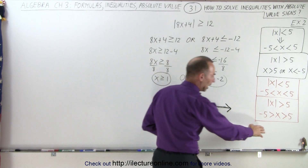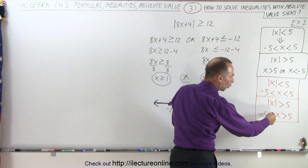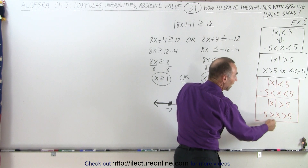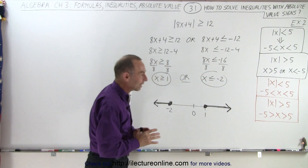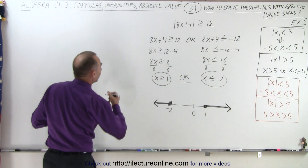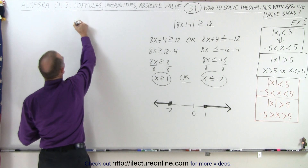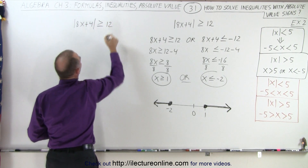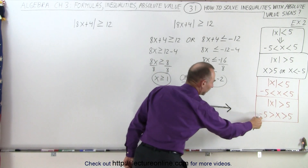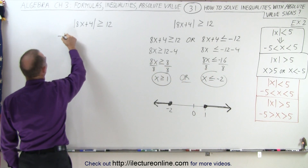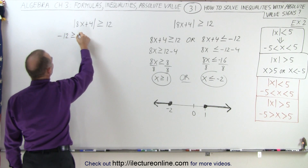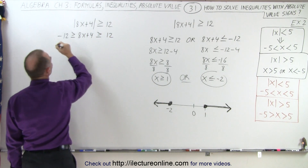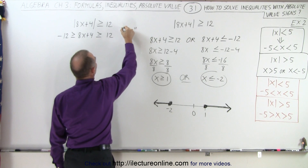But can we solve it a different way? Notice that this is also an or condition, because x cannot simultaneously be less than negative 5 and greater than 5. If we understand that it is an or condition, let's try it that way. We have 8x plus 4 greater than or equal to 12, and we write down negative 12 on the other side: negative 12 is less than or equal to 8x plus 4, which is greater than or equal to positive 12. Again, this is an or condition since both cannot happen at the same time.